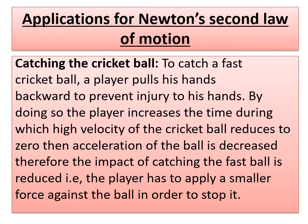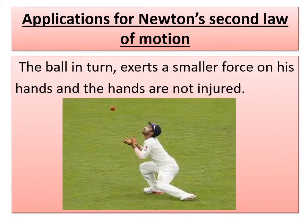The player increases the interaction time. Here the time during which the high velocity of a cricket ball reduces to zero, then the acceleration of the ball is decreased. Therefore, the impact of catching the fast ball is reduced. That means here the player has to apply a smaller force against the ball in order to stop it. The ball in turn exerts a smaller force on his hands and the hands are not injured.